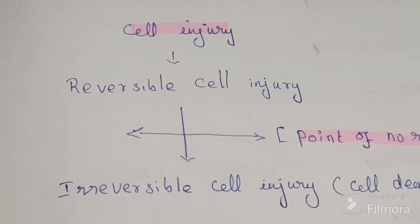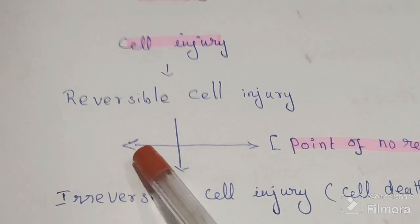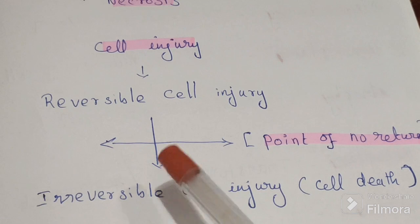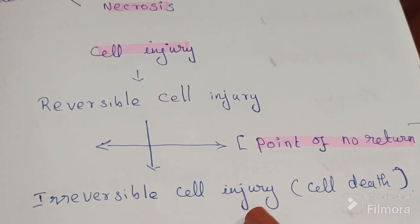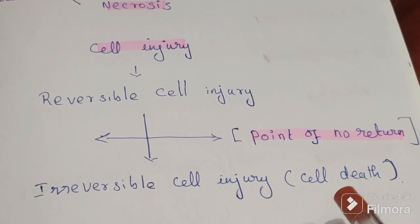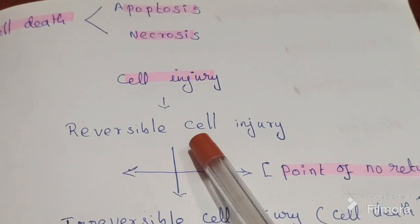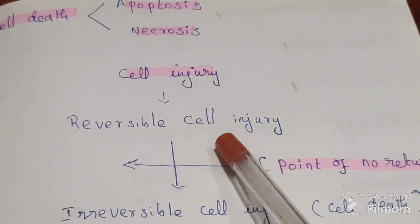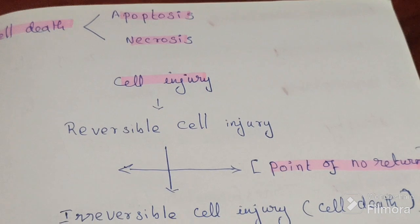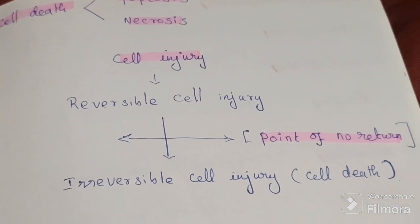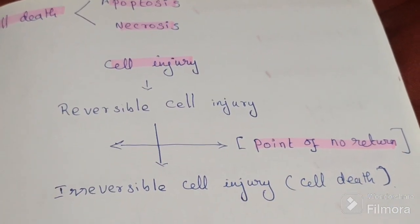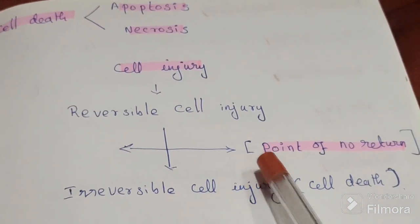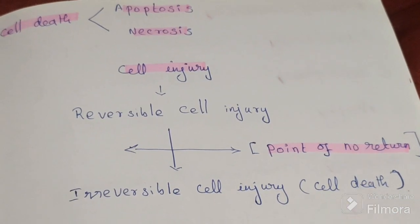At some point in time, there is a point of no return. Before this point, everything is reversible. But after this critical point, irreversible cell injury takes place, leading to cell death. The boundary between reversible and irreversible cell injury is called the point of no return.